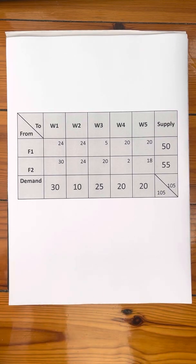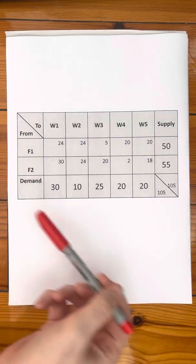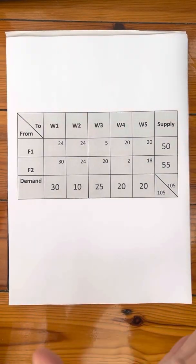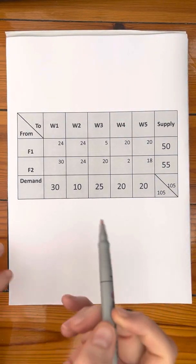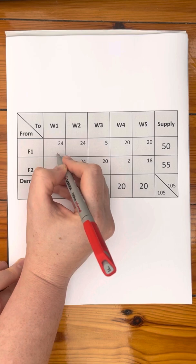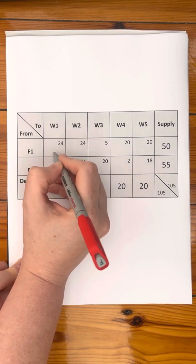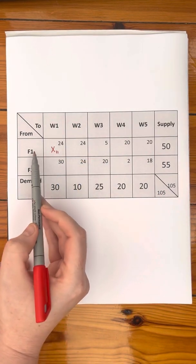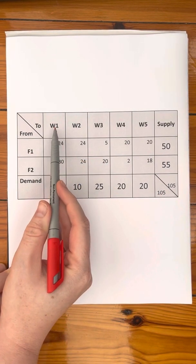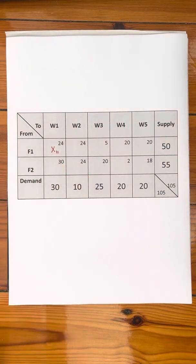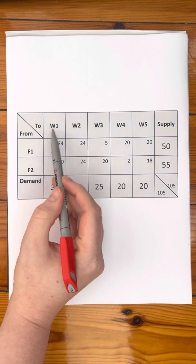The transportation problem has a very specific setup, and that setup can be seen in this table. The first thing to consider is that this piece here is actually representing a decision variable — I'm going to call it X1-1, which is the decision variable from factory 1 to warehouse 1, from the first origin to the first destination.